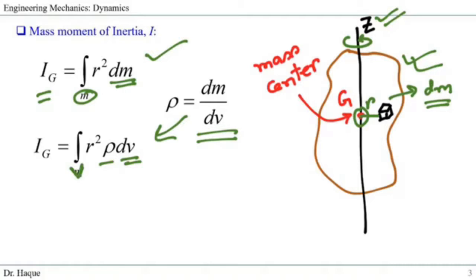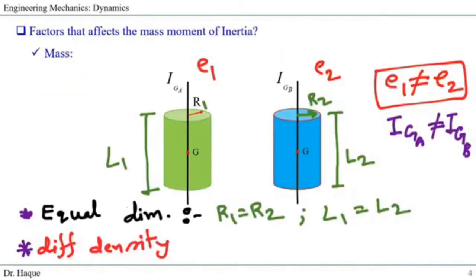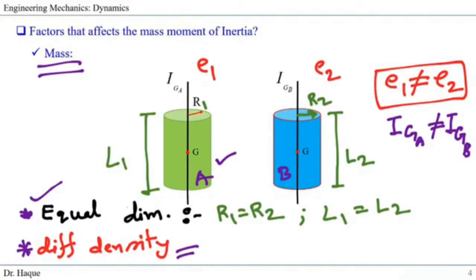What are the factors that affect the mass moment of inertia? The first one is mass, because it is involved in the equation. For example, if we have two cylinders A and B with the same dimensions and radius, but different densities, this leads to different masses. With the same axis of rotation, the different density leads to a different mass moment of inertia.